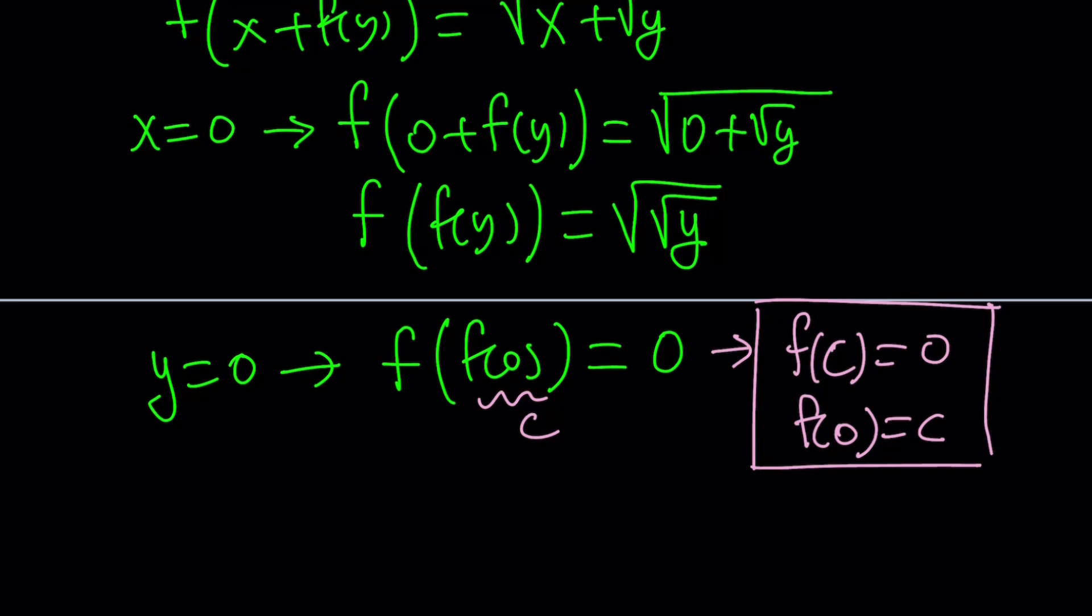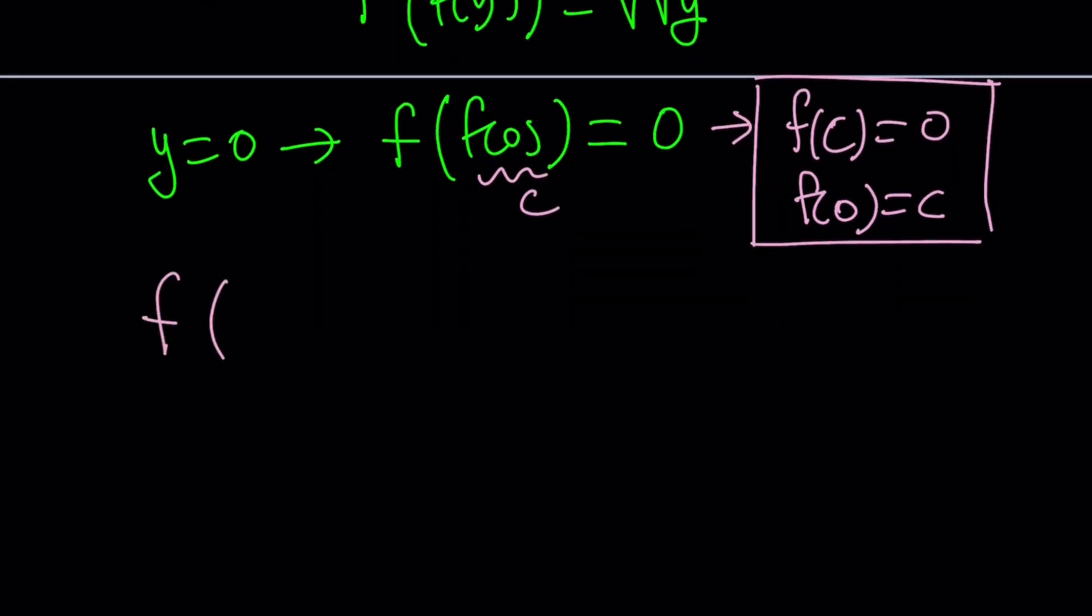Now, notice that f of c is 0. So how could we possibly use that information in the original equation? Let's go ahead and take a look at the original equation one more time. So this is what you'll be doing a lot of times when you're solving a functional equation. You're going to have to refer to the original equation time to time. Because you kind of need to go back and replace x or y with something else. You know, constantly do it until you can arrive at a solution.